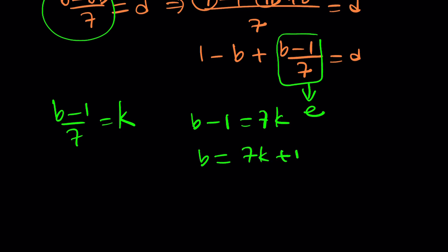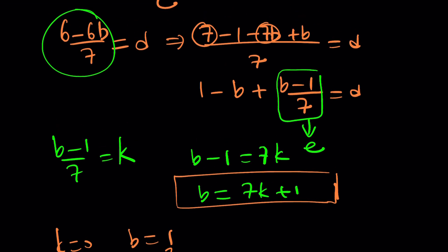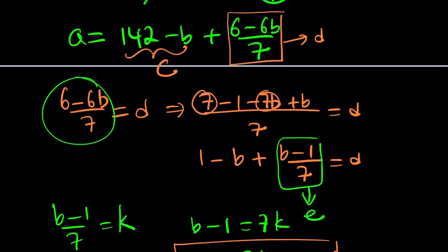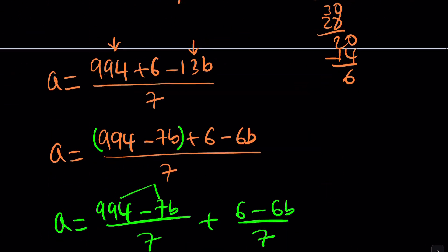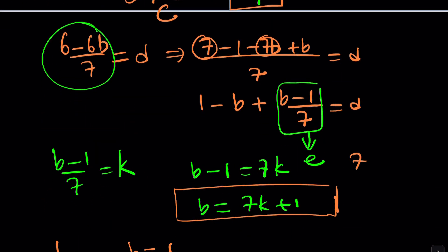This is the best part because we can start finding some values for B, such as if K equals 0, B equals 1. If K equals 1, B equals 8, and so on. These are going to give you some values that are helpful. For example, if B equals 1, then D is going to be 0, and you're just going to continue finding the ABC values. Let's take a look. What was the original problem? 7A plus 13B equals 1,000.